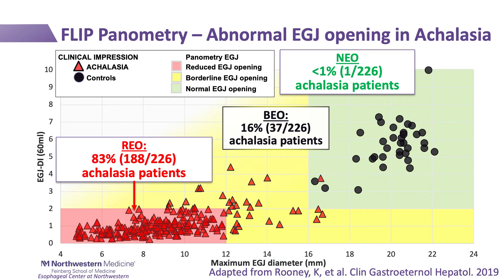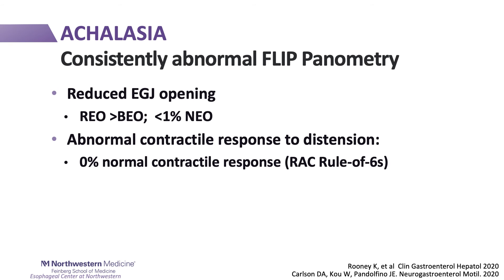Normal EGJ opening on FLIP planometry carries the potential to essentially rule out achalasia — thus, if the goal of your motility evaluation is to solely rule out achalasia, you may be able to proceed without manometry. In the setting of a high pretest probability for achalasia — such as a fitting clinical history, suggestive endoscopic appearance, or a barium esophagram appearing like achalasia — FLIP planometry may be sufficient to confidently diagnose achalasia.